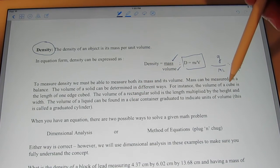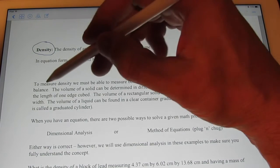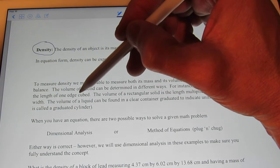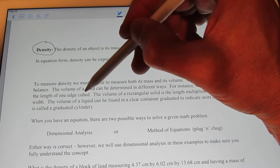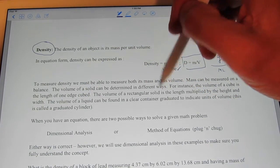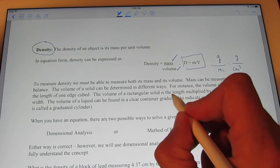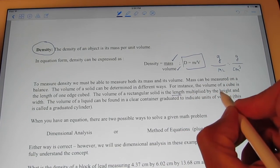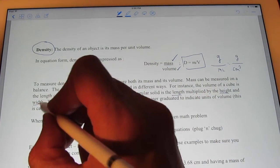For instance, the volume of a cube, if you remember, we found the volume of a cube in an earlier video, is simply the length of each, well, one edge, cubed. The volume of a rectangular solid is the length multiplied by the height and the width.